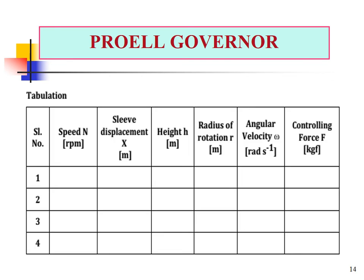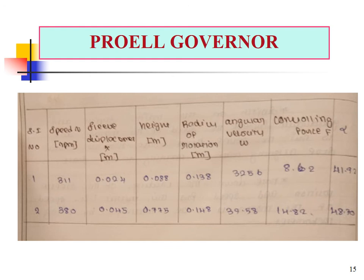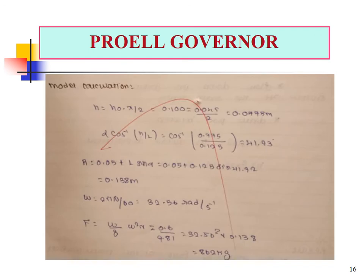The tabulation for the Proel Governor records speed, sleeve displacement height, radius of rotation, angular velocity, and controlling force. A model calculation example uses speed of 311 RPM, sleeve displacement of 0.024 m, height of 0.088 m, radius of rotation of 0.138 m, angular velocity of 32.56 rad/s, controlling force of 8.62 kg, and alpha of 41.92 degrees. All values are calculated using the provided formulas.